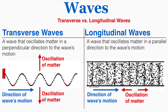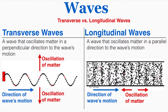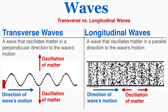A transverse wave is a wave that oscillates matter in a perpendicular direction to the wave's motion. A longitudinal wave is a wave that oscillates matter in a parallel direction to the wave's motion. I'm going to play these animations and show you what I mean by that.